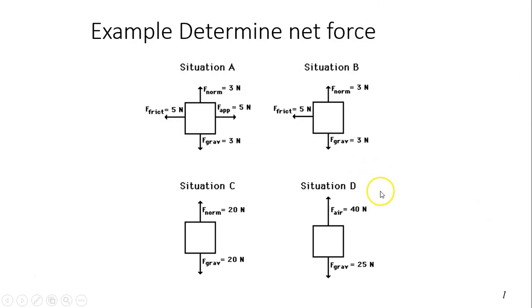Another example for determining the net force. Situation A: up and down cancel, left to right cancel, net force equals zero. Situation B: up and down cancel, the one to the left, 5 Newtons, is the one you have left, that's 5 Newtons left. Situation C: up and down cancel, net force equals zero. Situation D: upward has more force than downward, so you have a net upward force of 50 Newtons up.